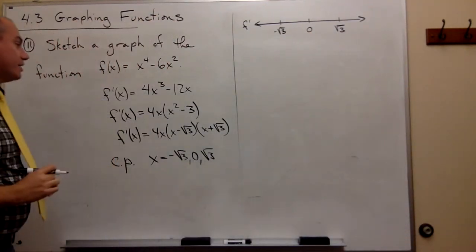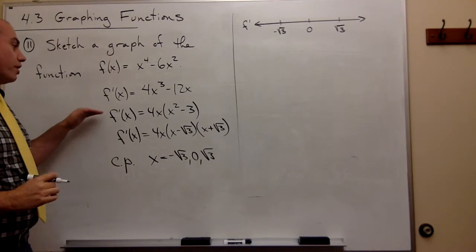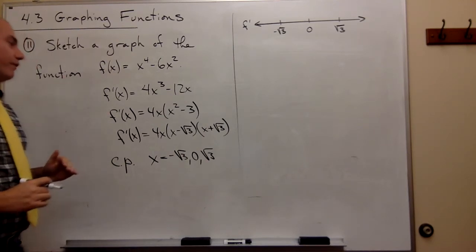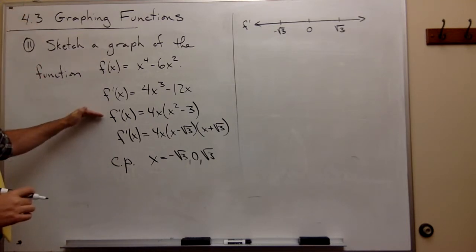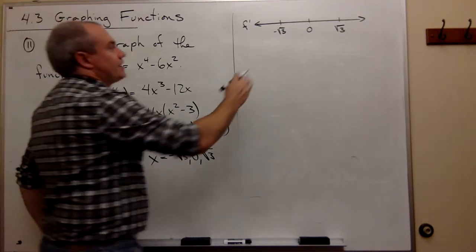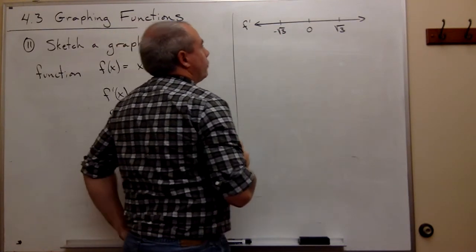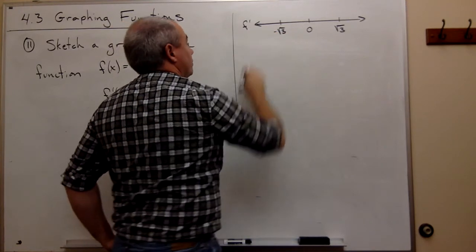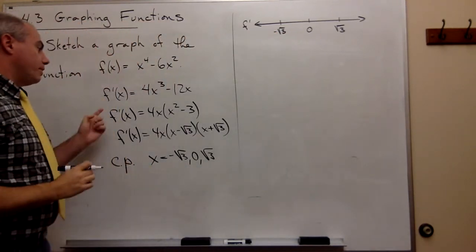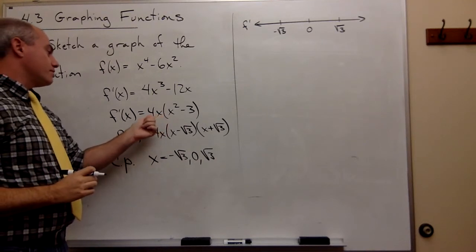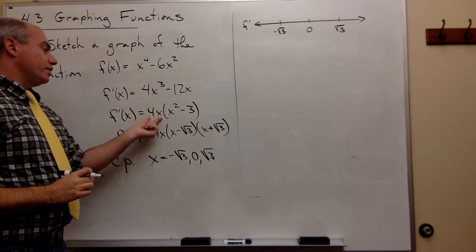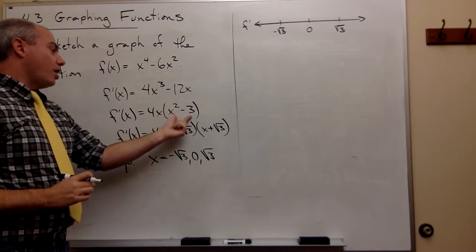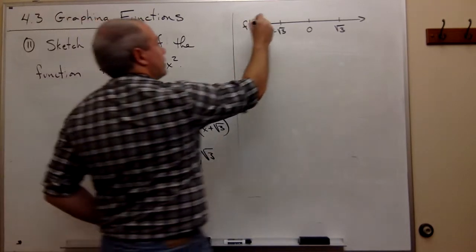Remember, we're testing into the first derivative. And I can use any one of these three as my first derivative, whichever works out best. This one looks pretty good to me. So let's say I take something that's smaller than root 3. How about negative 2, for example? So I plug in negative 2, and I get negative 2 times 4. That's certainly negative. And negative 2 squared is 4 minus 3. That's certainly positive. So positive times negative is negative.